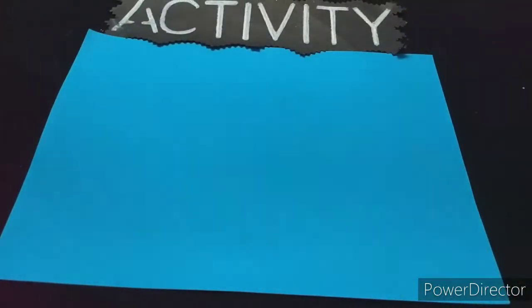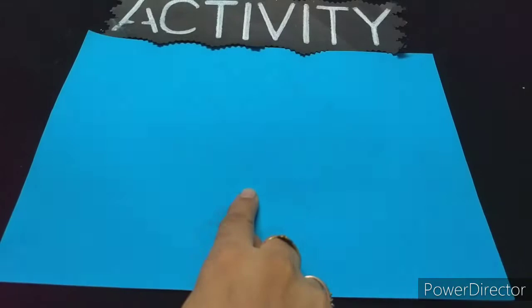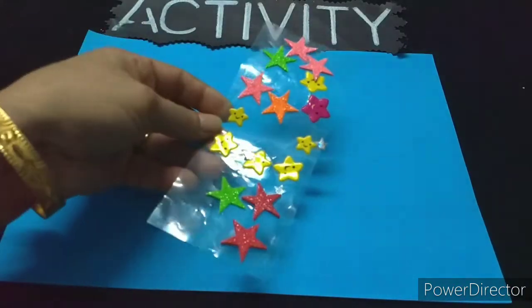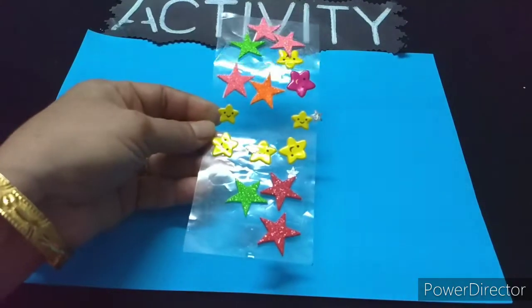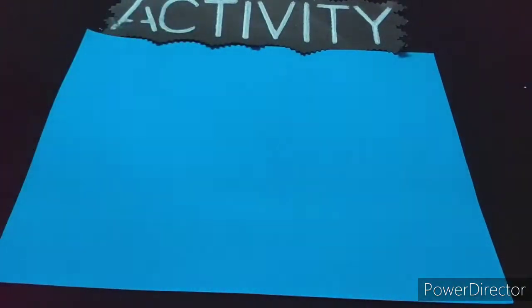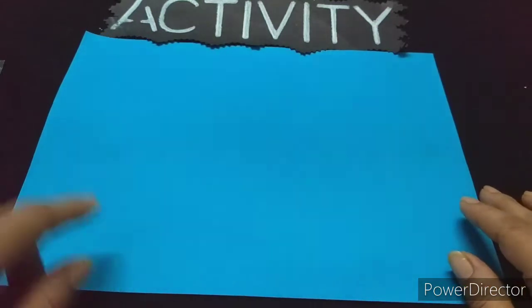It is activity time. Look children, what do I have here? I have a blue color paper and some stars for decoration and some yellow smiley stars. Let's begin. See children, we have a paper.